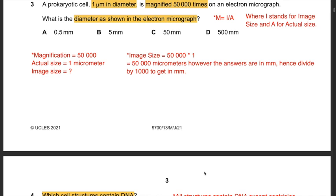Question 3: A prokaryotic cell 1 micrometer in diameter is magnified 50,000 times on an electron micrograph. The formula is: magnification = image size ÷ actual size. Rearranging: image size = magnification × actual size = 50,000 × 1 = 50,000 micrometers. Converting to millimeters by dividing by 1000 gives 50 mm. The answer is C.